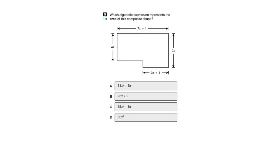For our third problem, the question says: which algebraic expression represents the area of this composite shape? This may look a little tricky, but it's actually pretty straightforward. The first thing I would do is separate this into shapes I know how to calculate the area of — rectangles, squares, or triangles. Here I can make two rectangles: this will be one rectangle, and this will be another rectangle, creating two areas.